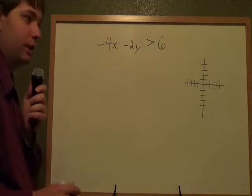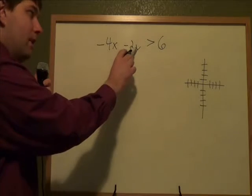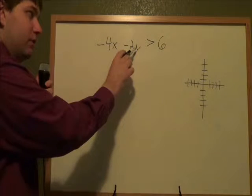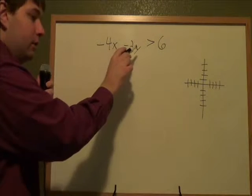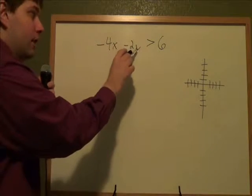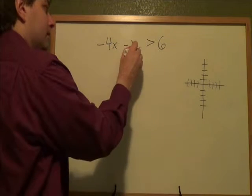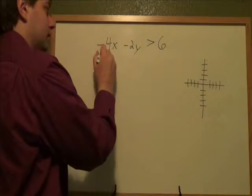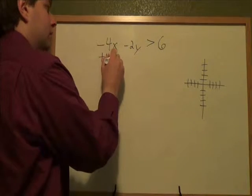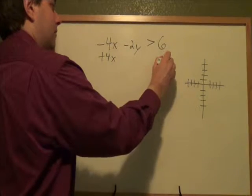To graph this linear inequality, we need to get y by itself. If y is not by itself, you want to graph a line or linear inequality or anything based on a line, you want to get y by itself. So to get y by itself, first up I'm going to move over this 4x. I'm going to say plus 4x because that will cancel out the minus 4x.